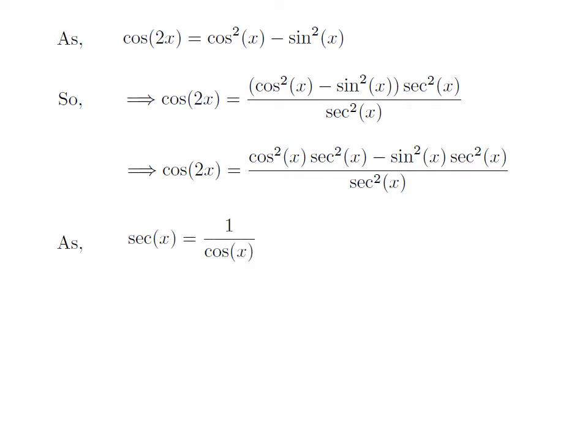As we know, secant of x is equal to 1 divided by cosine of x. After applying this identity in the numerator, we get: cosine of 2x is equal to (square of cosine of x divided by square of cosine of x) minus (square of sine of x divided by square of cosine of x), in the numerator, and square of secant of x in the denominator.